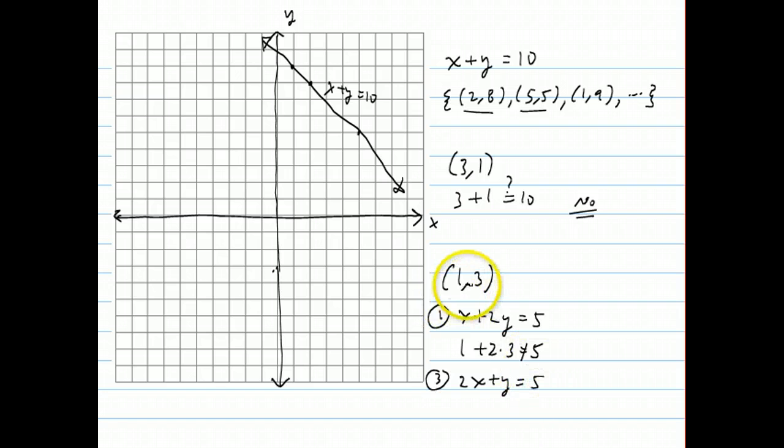Well, if you put 1 in for x and 3 in for y, you get 2 times 1 plus 3 equals 5, which becomes 5 equals 5. And it does. And that means that the point 1 comma 3 would be on the line represented by the equation 2x plus y equals 5, although we don't need to actually graph it in order to determine that.